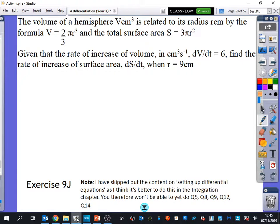Okay, so we're going to have a look at some connected rates of change questions, but this time there's going to be something that is a little bit different. Reading through this question, we've got the volume of a hemisphere, which is half of a sphere, and it's related to its radius r centimeters by the formula V equals 2 over 3 pi r cubed. It also tells us the total surface area is S equals 3 pi r squared.